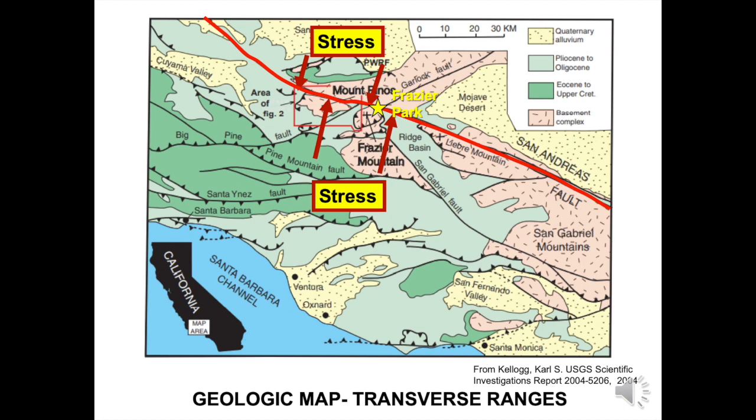This geologic map shows major rock types and faults at the Earth's surface in the transverse ranges. Fraser Park is the crossroads where major faults such as the Big Pine and Garlock intersect with San Andreas. A variety of rock types are present — pink represents igneous and metamorphic rocks, while green and yellow shades are younger sedimentary rocks and alluvium. Major faults are marked with wide black lines. Ongoing stress from two directions is elevating land along the big bend segment, similar to what happens when you squeeze a toothpaste tube.